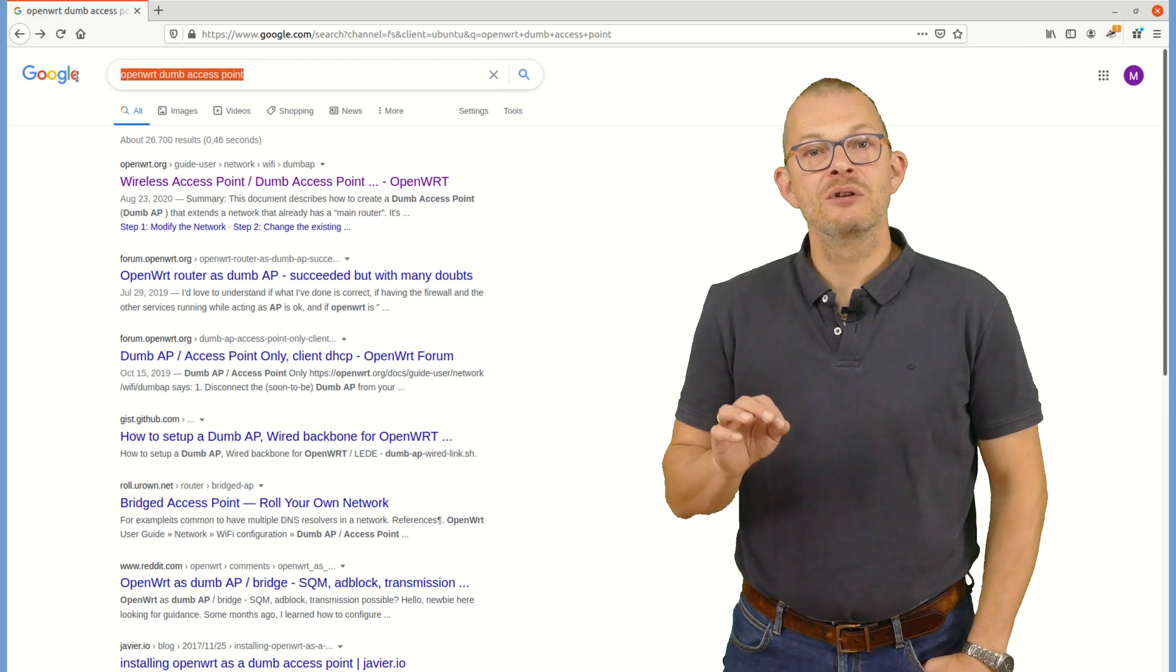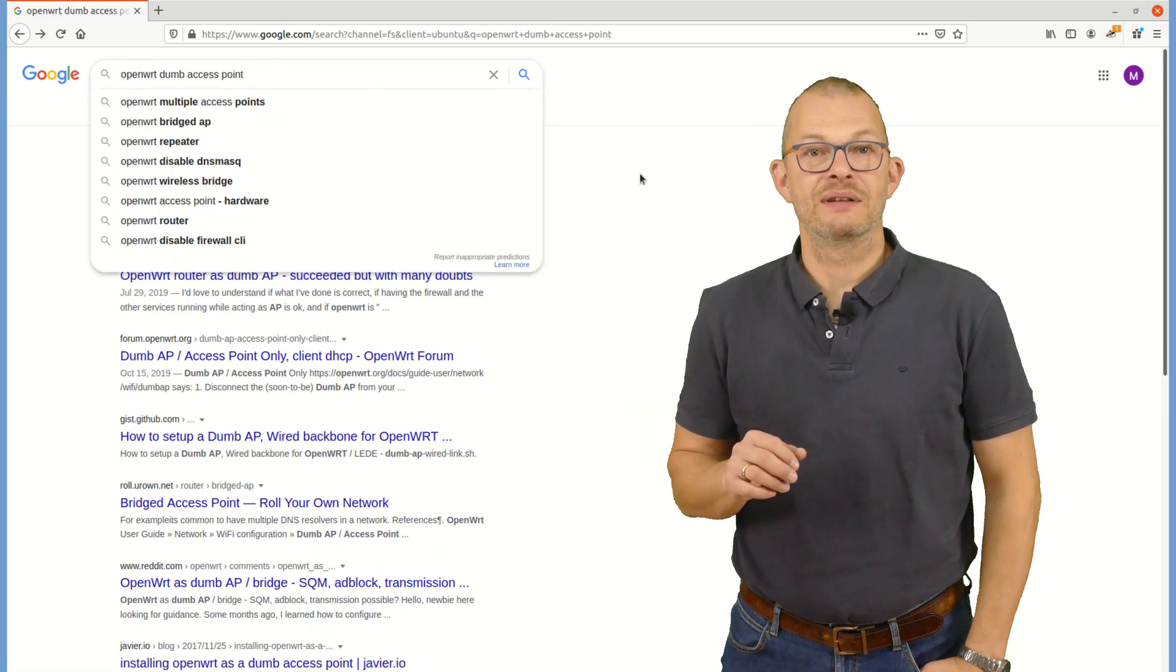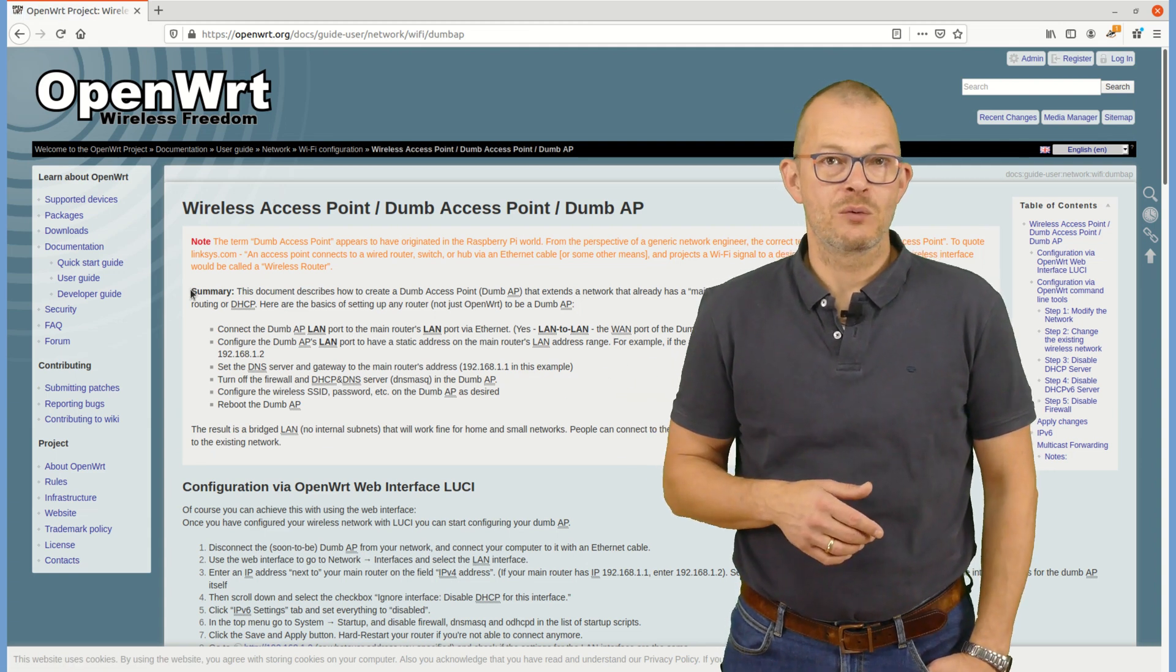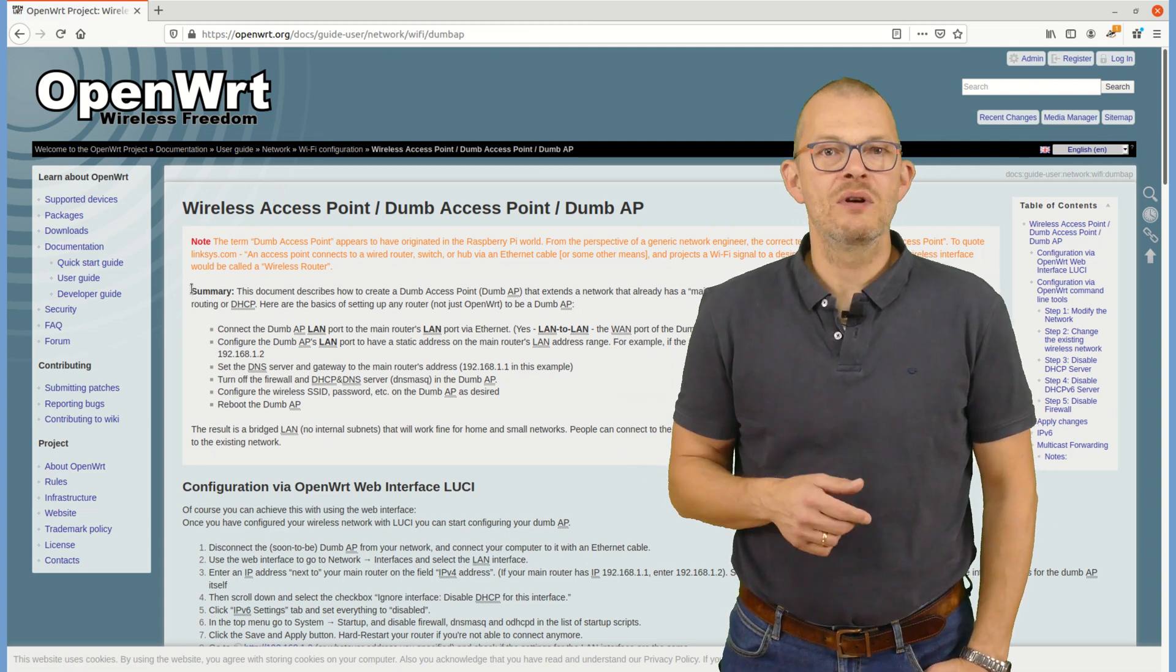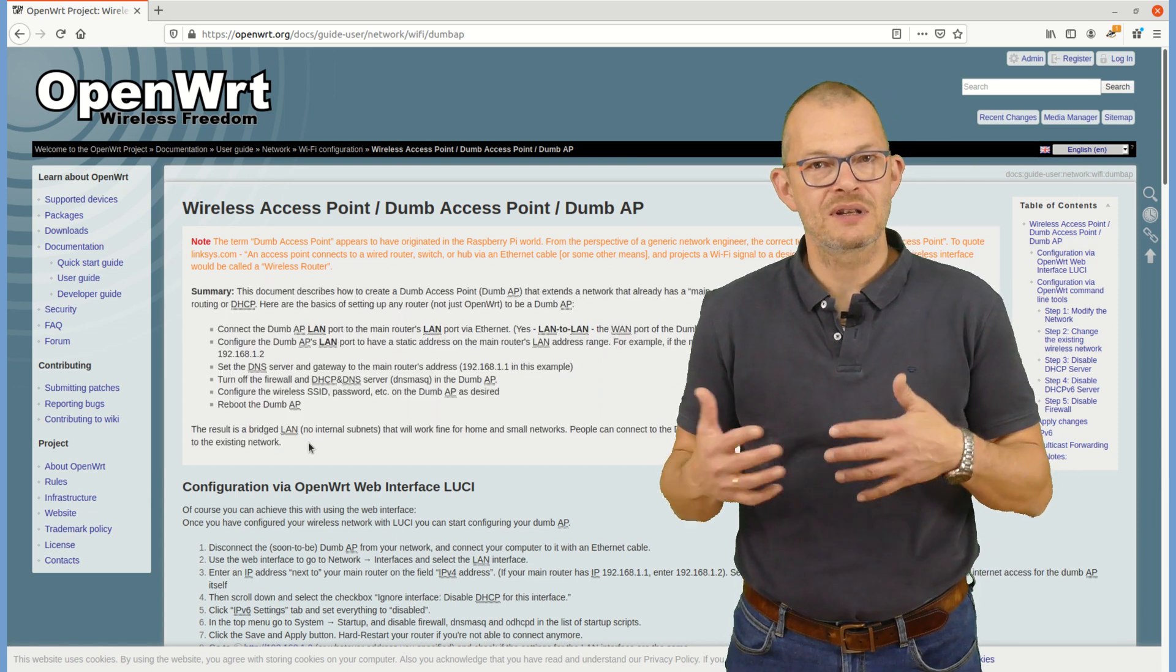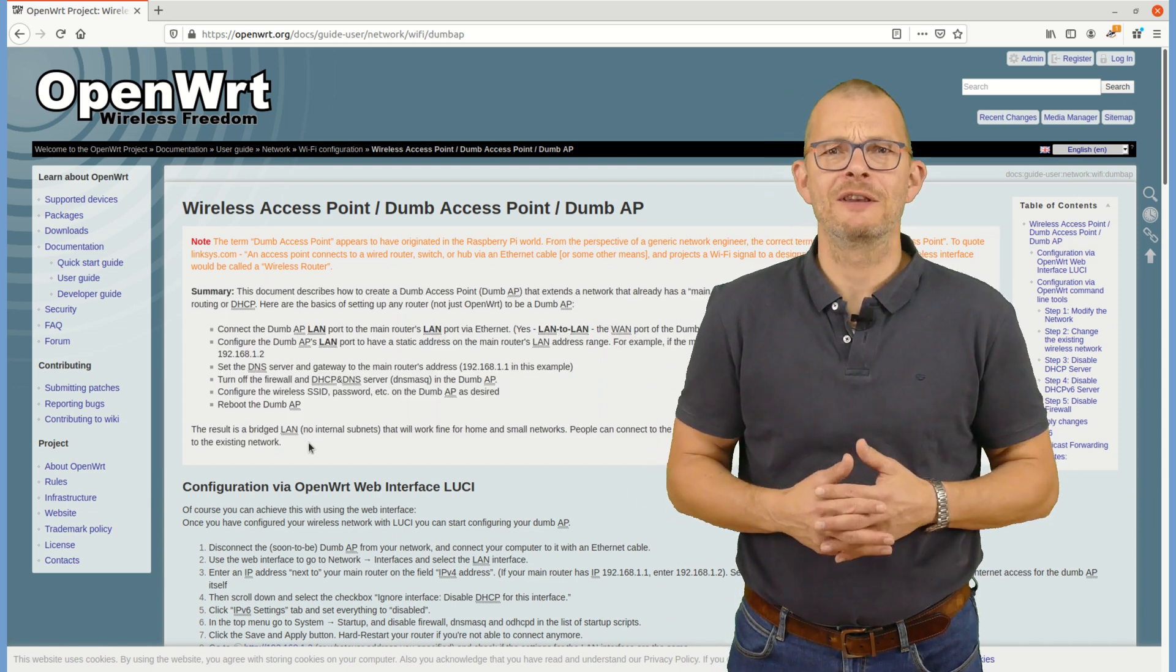Just google for OpenWRT dumb access point and it will point you to that article on the OpenWRT website. Let me know if you want to have a separate video on extending Wi-Fi over multiple network names and zones. Please leave me a comment.